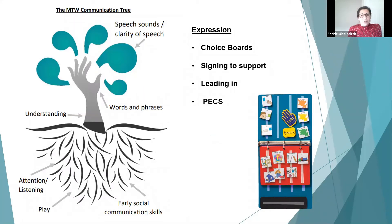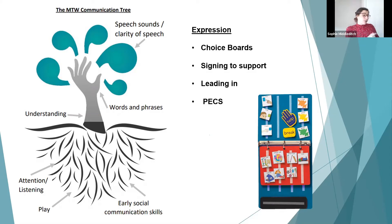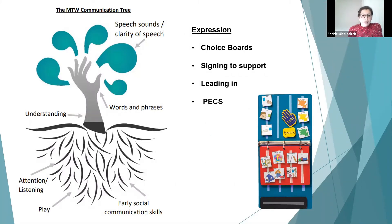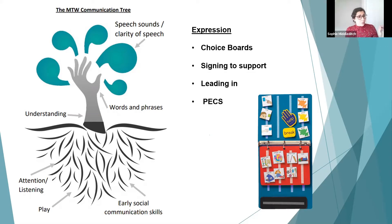PECS has lots of different stages — they have their own training system, currently available online. It builds from single symbols to phrases: a sentence strip might say 'I want bubbles.' You can add attributes like colour or size — 'I want the green slime' — which adds motivation if a particular colour is preferred. There is also an 'I see' symbol for commenting on what's around them, and an 'I hear' option. There is also a 'help' symbol to encourage asking for help, and a 'break' symbol — really important for self-regulation.